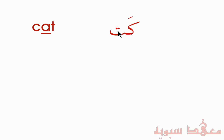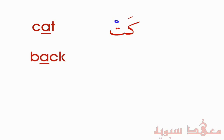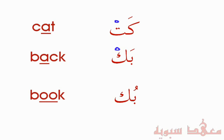If we give it a vowel mark, for example the Fatha, it would be 'kata'. Or 'katu'. Or 'kati'. Similarly, the word 'back' — there's a Sukun there as well. And we have the word 'book' — same thing, there's a Sukun there.